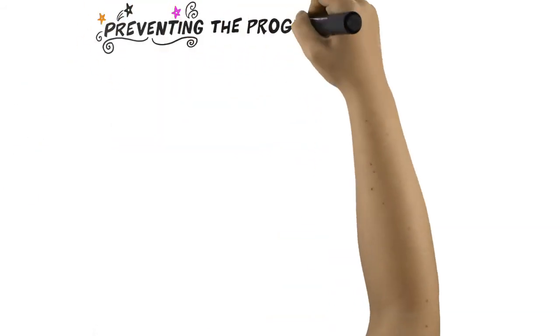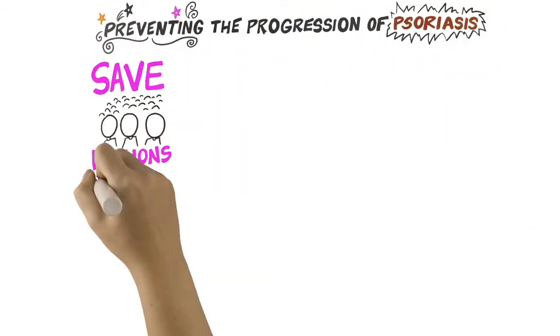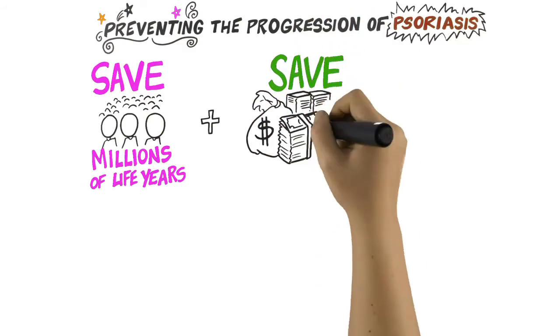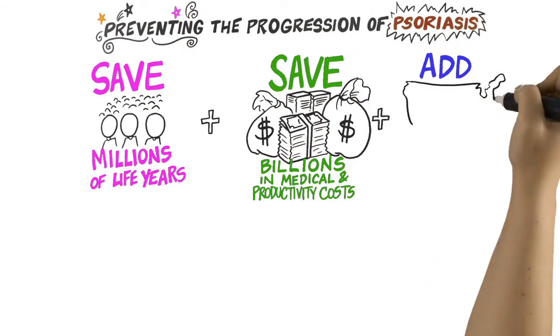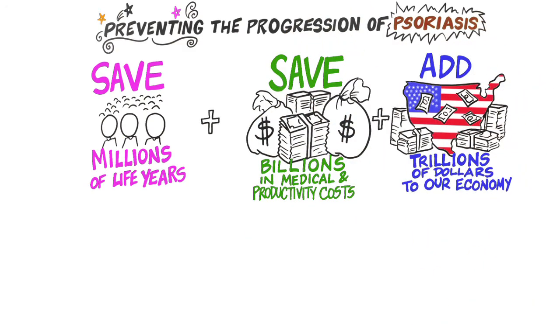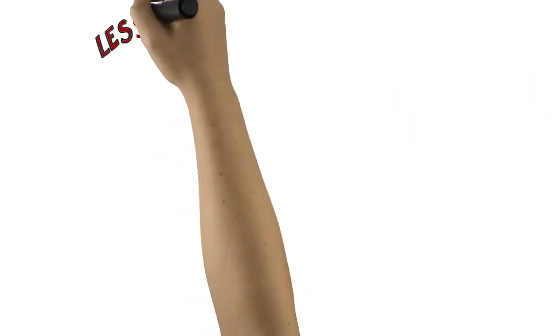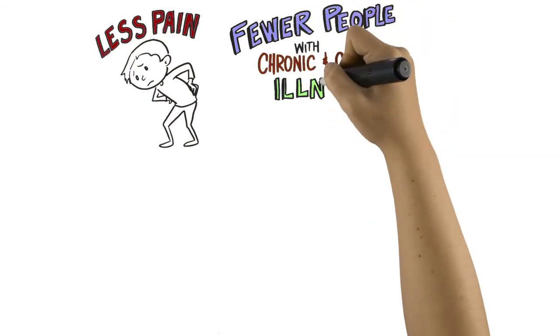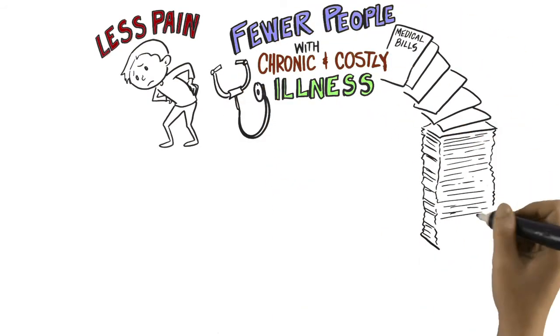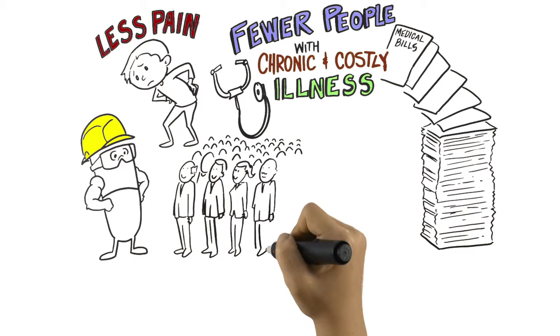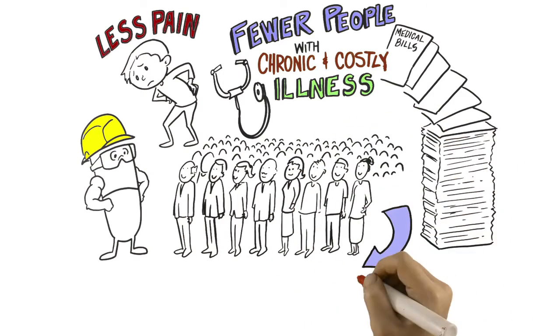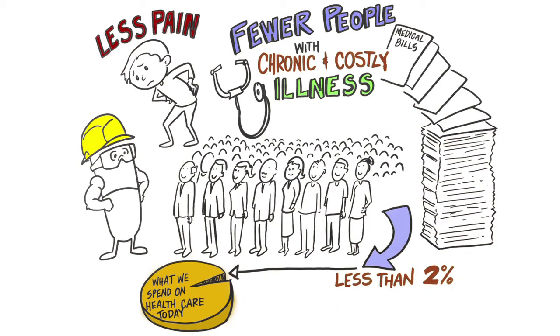Preventing the progression of psoriasis would save millions of life years, save billions of medical and productivity costs, and add trillions of dollars to our economy because more people would be living healthier and longer lives. There would be less pain and fewer people with chronic and costly illnesses if we treated every psoriasis sufferer with immune-balancing medicines. It would cost less than 2% of what we spend on healthcare today.